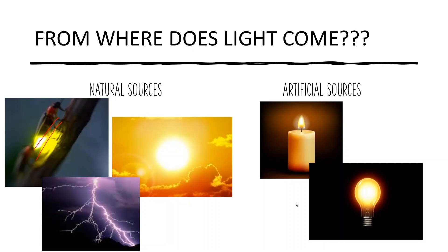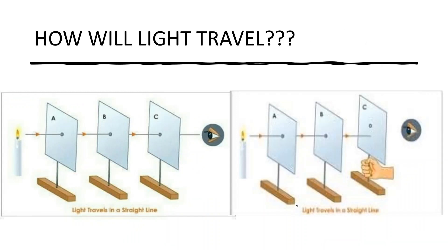The Sun is millions of kilometers away from the Earth, but we can see its light because light travels from place to place. Light always travels in a straight line — you need to remember that. You can perform an activity: take cardboards and put a hole in each of them. Place three or more cardboards in order such that every hole is aligned parallel to the others, and put a source of light — a candle — on one side.